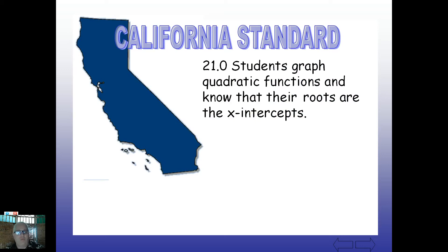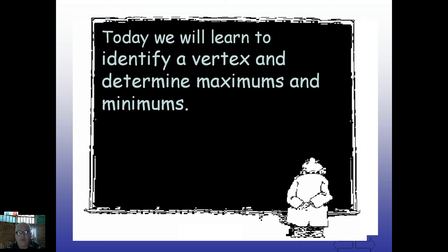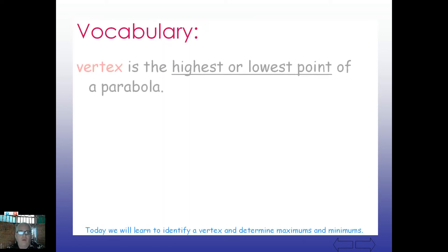We're still in Standard 21.0, just as we were in our previous lesson. We're really going to be looking at functions, quadratic functions specifically, in regards to their roots and x-intercepts and even different words that mean the same thing sometimes. We're going to identify a vertex today. We're going to find out what a vertex means and determine maximums and minimums. Much easier than you might think. We'll be looking at a lot of pictures today.